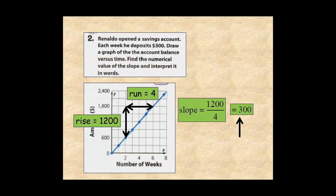Notice that the slope is the same as the rate of increase in the account, the weekly deposit of $300.